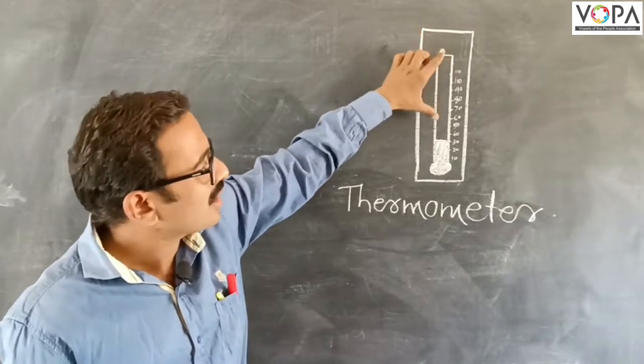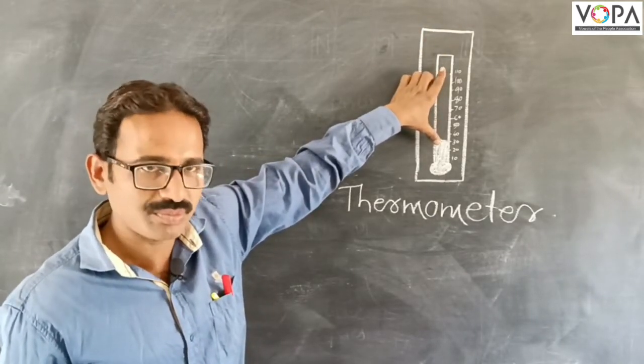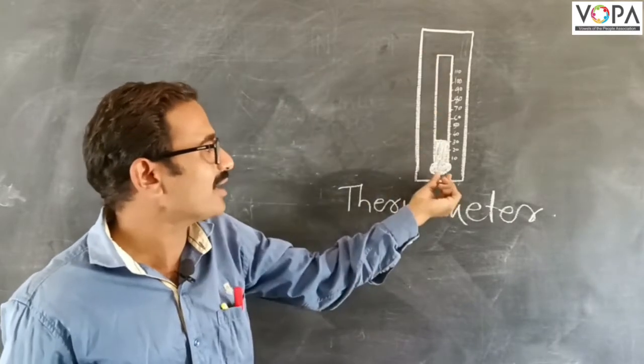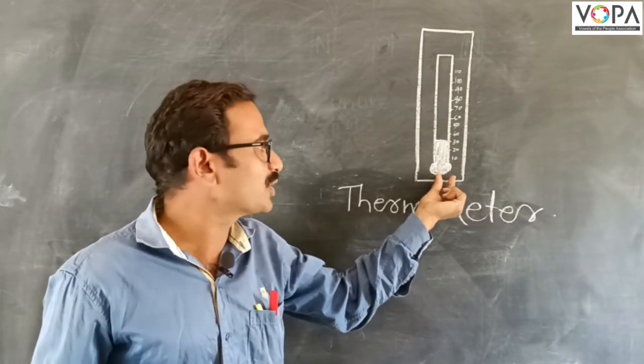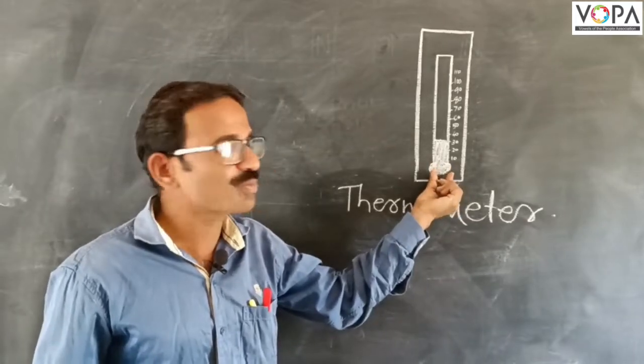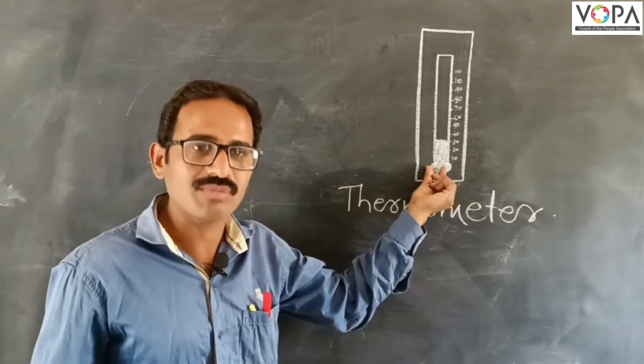There is a vacuum in that tube, and this bulb contains the metal mercury.